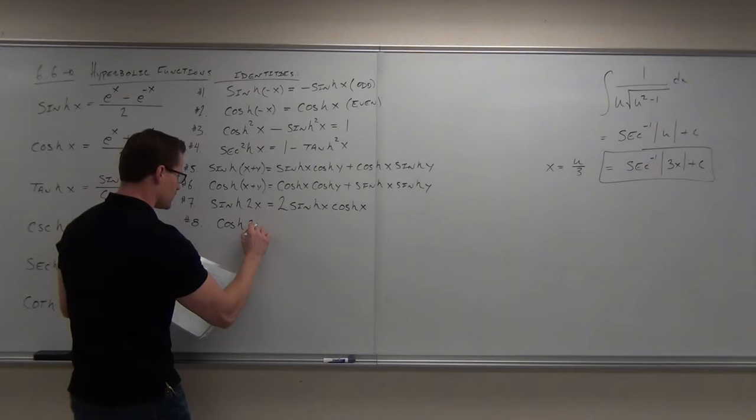Let's prove it. Going back to the definition: the derivative of sinh(x) is the derivative of (e^x - e^(-x)) / 2. The derivative of e^x is e^x. The derivative of e^(-x) is negative e^(-x) — that negative changes the minus to a plus. So this is (e^x + e^(-x)) / 2, which is cosh. The derivative of sinh is cosh.